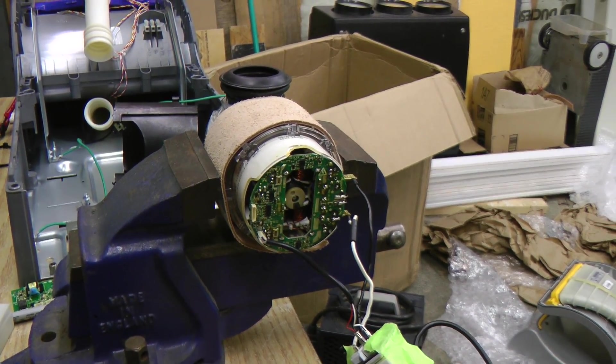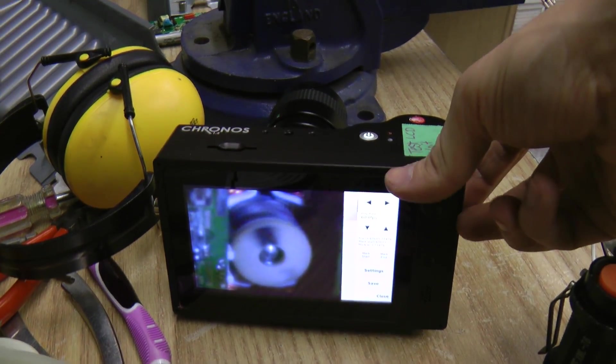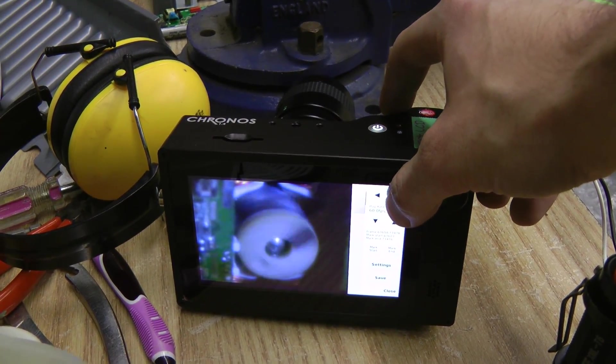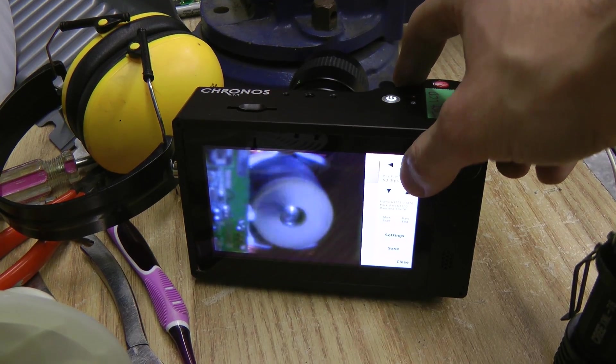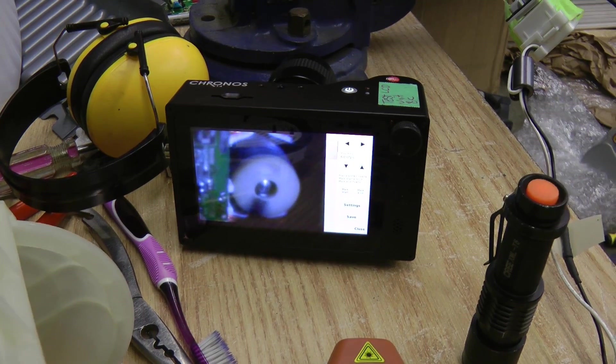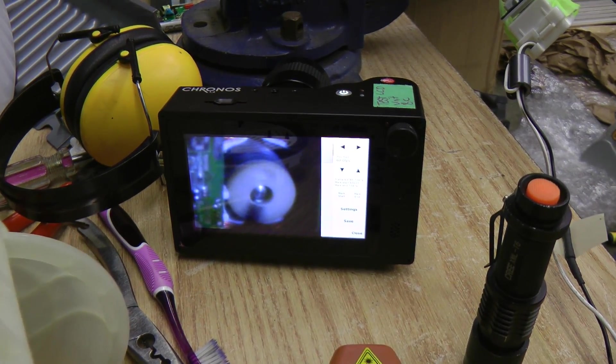I was curious what speed this actually runs at. And according to the camera, it's 12 frames to do a full rotation at 16,700 frames per second. Which comes out to, I believe, 83,500 RPM. Which sounds about right based on what Dyson was advertising.